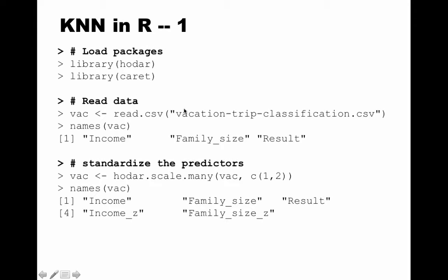We read the data from vacation_trip_classification.csv, which is posted on the course web. The data file initially has three columns: three attributes. The first thing to do is standardize the predictors — income and family size — because those are the predictors, and the outcome is 'result', the target variable, which we won't touch. To do that we use the convenience function hodar.scale.many.